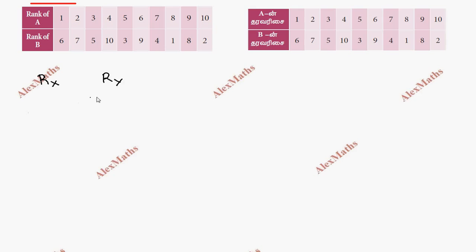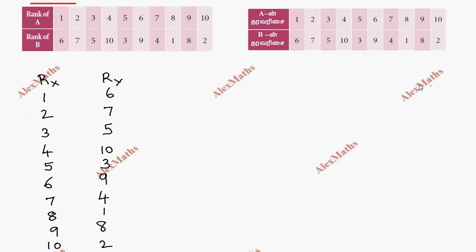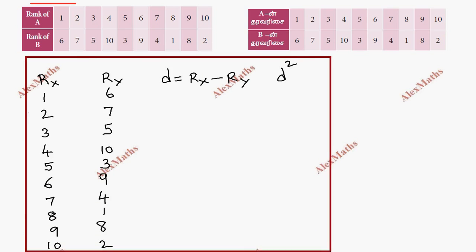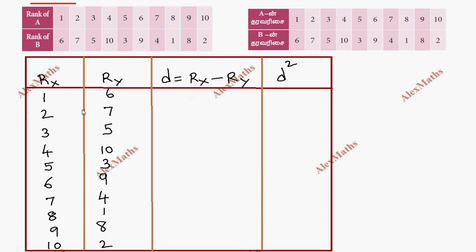What we need to find is the rank difference d, which is the rank of X minus the rank of Y. Then we compute d squared. So in the table we will complete the d and d squared columns.